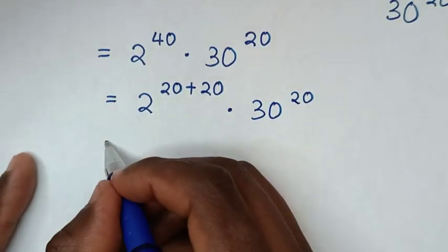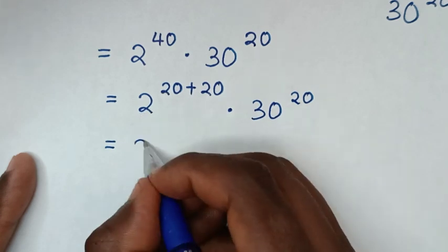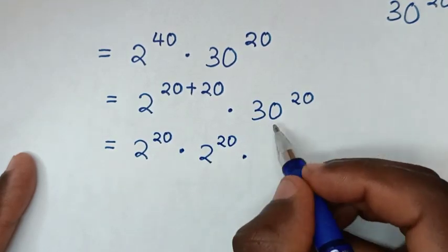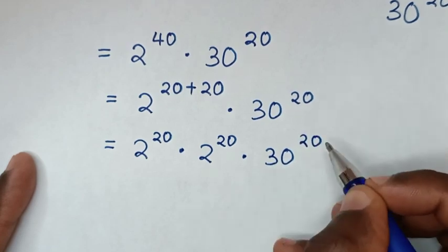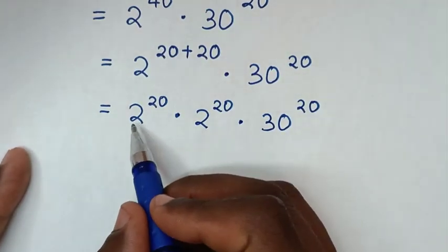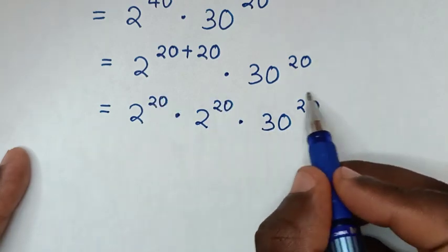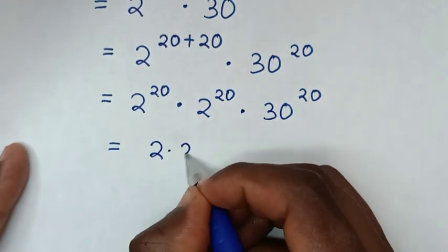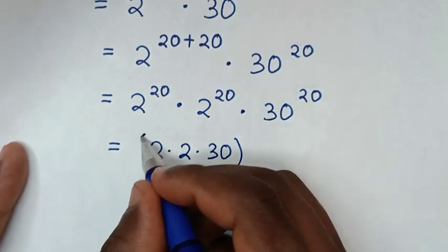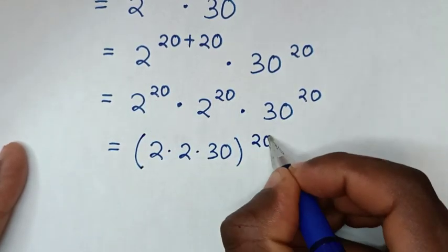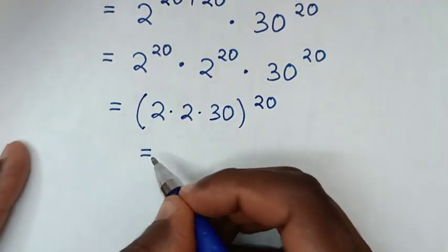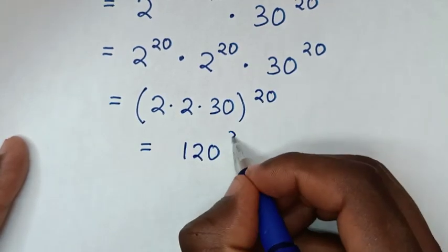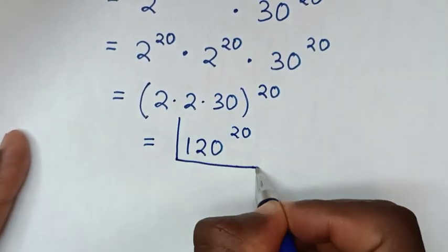Then in the next step it will be equal to 2 power of 20, times 2 power of 20, times 30 power of 20. Here we have multiplication of exponents with the same power of 20, so it will be 2 times 2 is 4, and 4 times 30 is 120, power of 20. Therefore, this is our final answer: 120 power of 20.